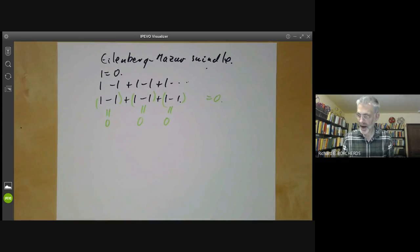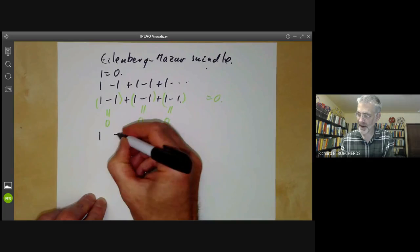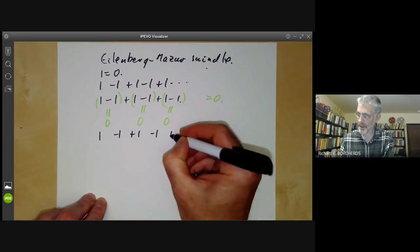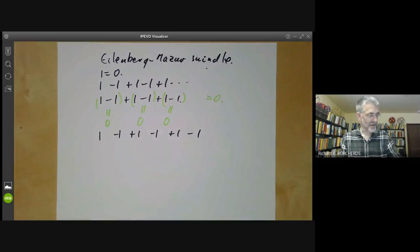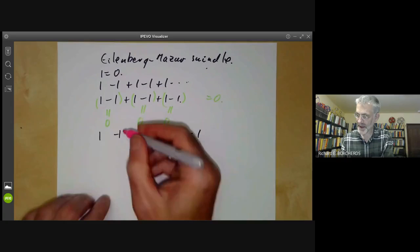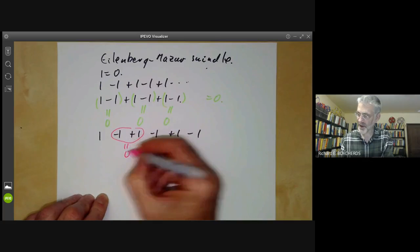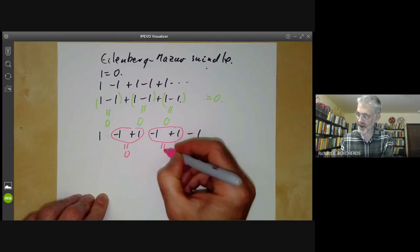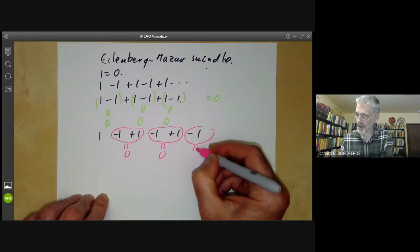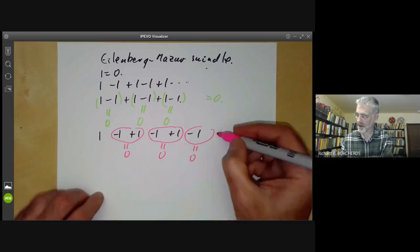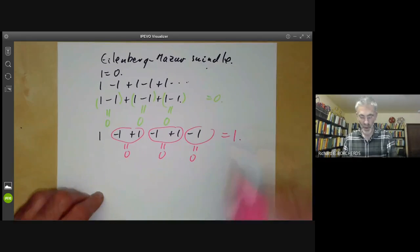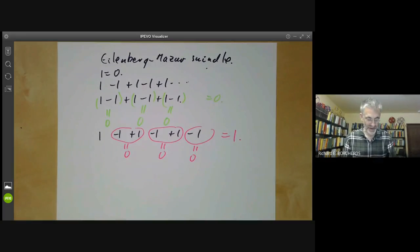On the other hand, we can pair off the elements differently. If we pair off these two elements, we get zero, and these two, we get zero, and so on, but we're left with a leading one. So this sum is equal to one. Therefore we find one is equal to zero.